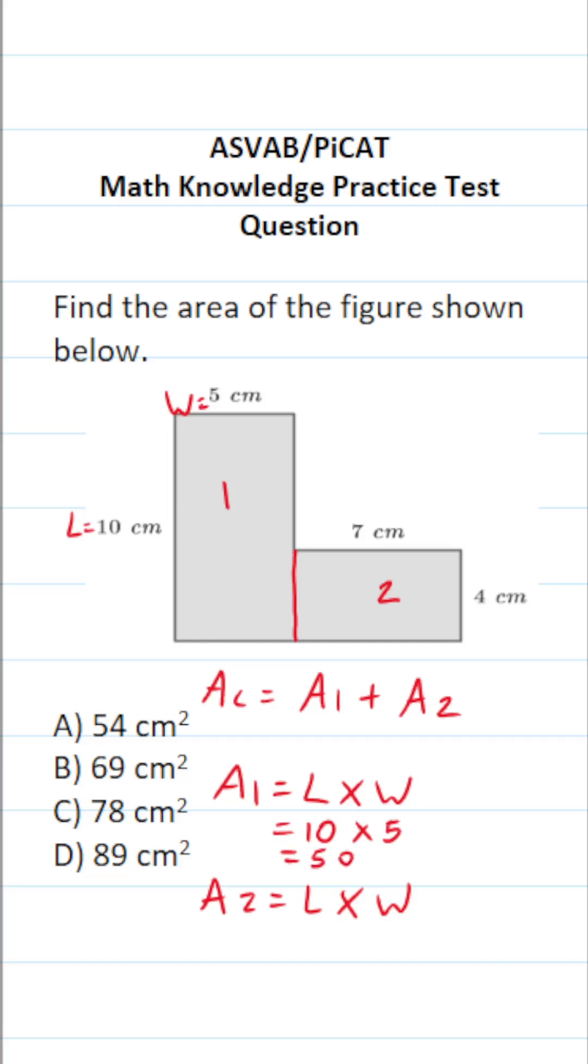So we know the area of this first rectangle is going to be 50 square centimeters. Let's find the area of the second rectangle. What is its length? It's right here. It's 7. What is its width? Its width is right here. It's 4. 7 times 4 is 28.